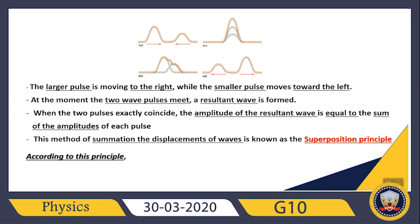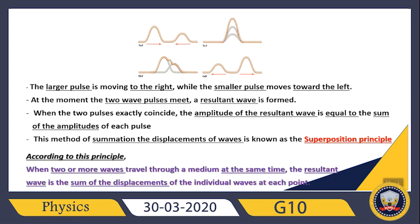So according to this principle, in general, when two or more waves travel through a medium at the same time, the resultant wave is the sum of the displacement of the individual waves at each point. The superposition principle tells us that when two or more waves travel through a medium at the same time, the resultant wave is the sum of the displacement of the individual waves at each point. The summation of both displacements gives us the amplitude of the resultant wave.